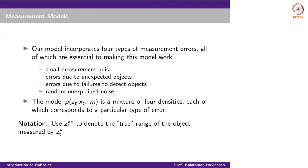A small notational point: when I say zt k star, I mean the true distance of the object in the direction the kth sensor is looking at time t. By contrast, zt k is the actual measurement, which is influenced by all the errors. So zt k star is what zt k is trying to measure, but it gets corrupted by all these noises.